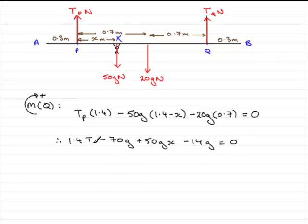Rearranging this then for the tension TP. We have that TP equals, all I need to do is add the 70G, the 14G and take away 50GX from both sides. And then finally divide by 1.4.